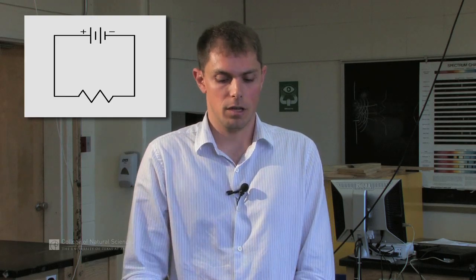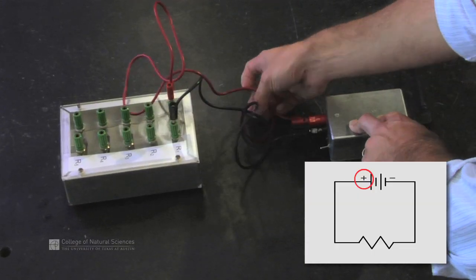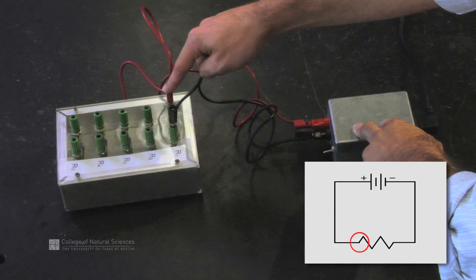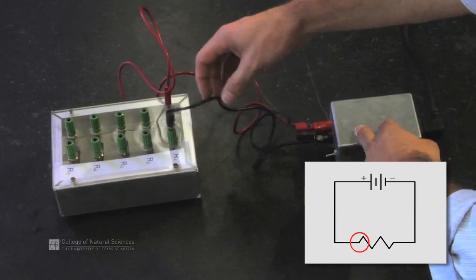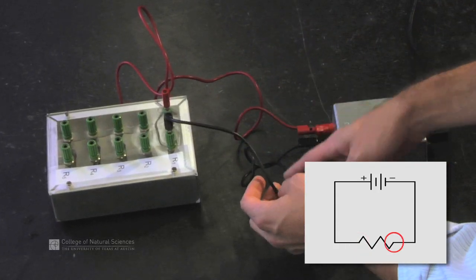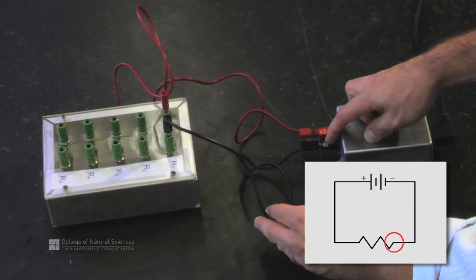Let's go back to our circuit diagram and do a quick check. The power supply is connected to a wire, the wire to the resistor, the resistor to a second wire, and that wire back to the power supply.